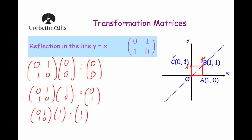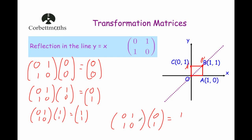And finally, point C. We multiply the matrix [0, 1, 1, 0] by the point (0, 1). We get 0 times 0 is 0, plus 1 times 1 is 1, so the x coordinate will be 1. And the second row: 1 times 0 is 0, plus 0 times 1 is 0, adding them gives 0. So C dash will be at the point (1, 0). So as you can see, the shape has been reflected in the line y equals x.